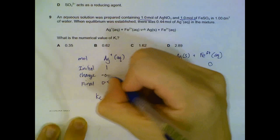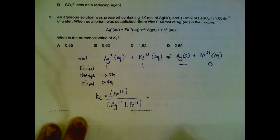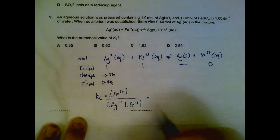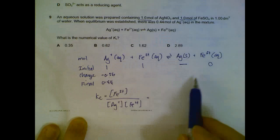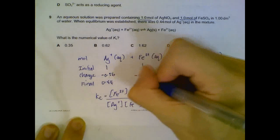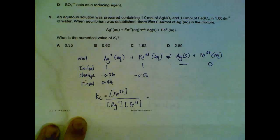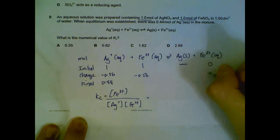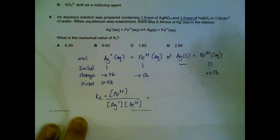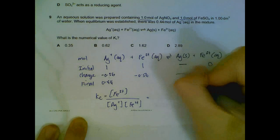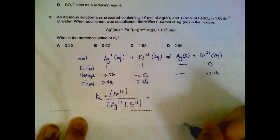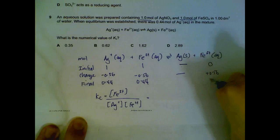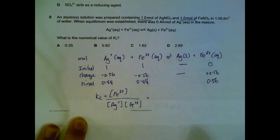For the change: we look at the final amount. We have 0.44 moles of silver remaining, so the change is a decrease of 0.56 from one mole. This affects all the other changes — 0.56 moles of iron(II+) are used up, and 0.56 moles of iron(III+) are formed.